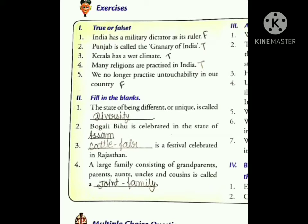The third one is: Kerala has a wet climate? Yes, it's true because Kerala is a coastal area, that's why it has a wet climate. The fourth number is: many religions are practiced in India? This is true because we know we are practicing many religions in our India.